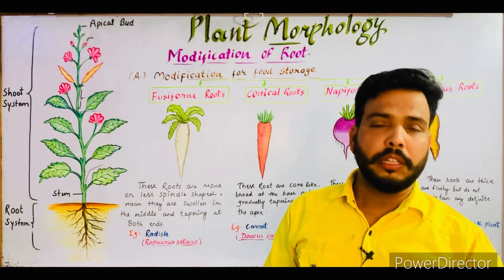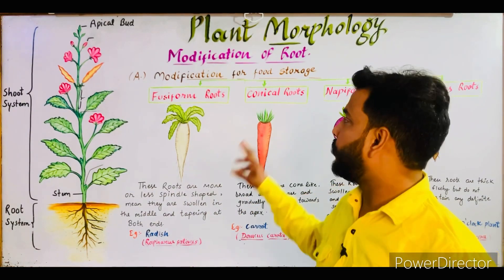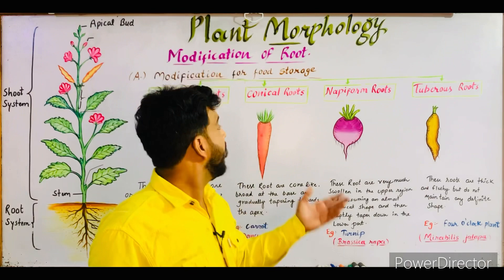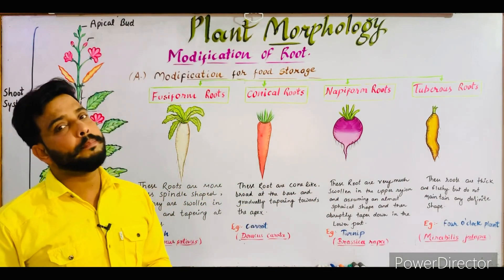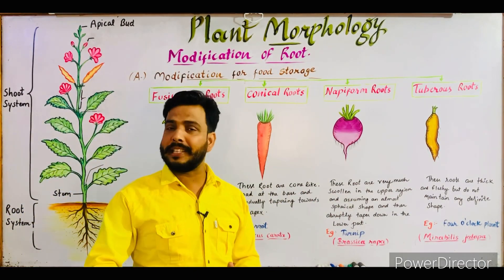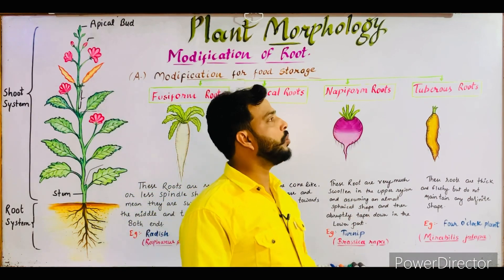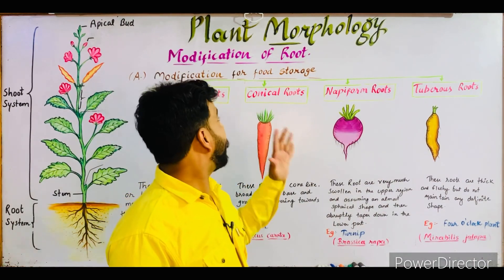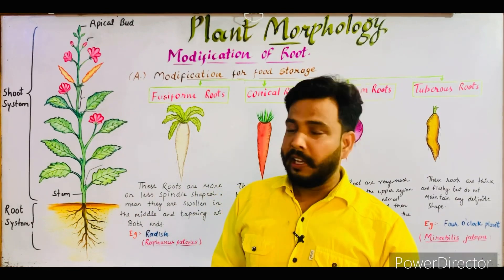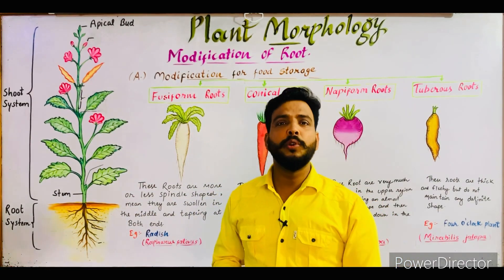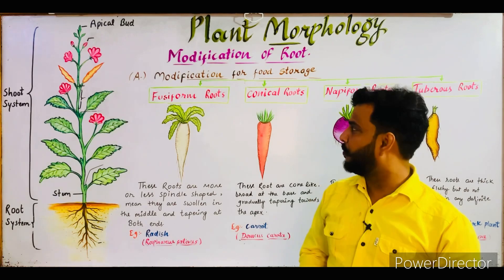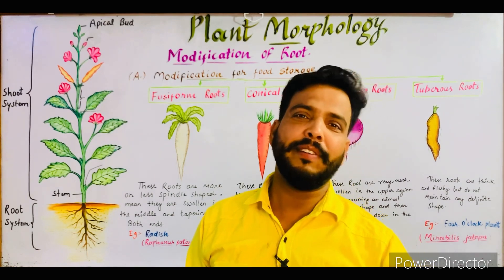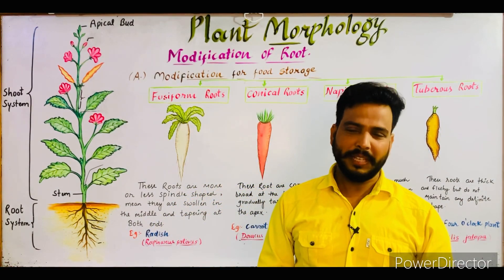To summarize, the different modifications of roots for food storage are: fusiform — example radish, Raphanus sativus; conical — example carrot, Daucus carota; napiform — example turnip, Brassica rapa, and sugar beet, Beta vulgaris; and tuberous — example four o'clock plant, Mirabilis jalapa. In my next lectures I will cover other modifications. If you have any questions, ask in the comment section. Thanks for watching, have a good day.